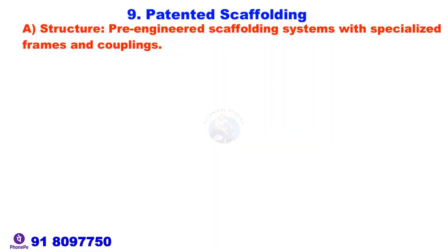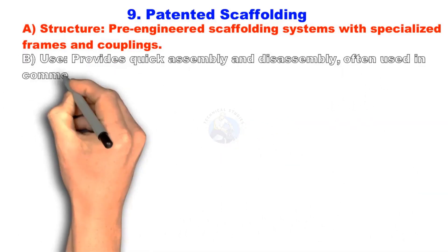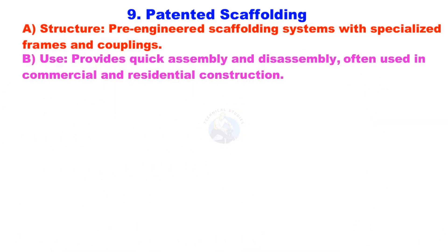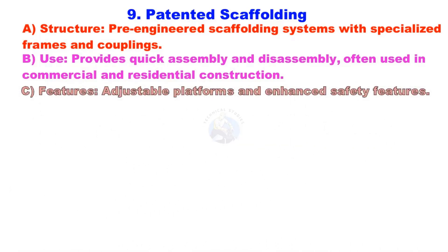Patented Scaffolding. These are pre-engineered scaffolding systems with specialized frames and couplings. They provide quick assembly and disassembly, and are often used in commercial and residential construction. Features include adjustable platforms and enhanced safety features.